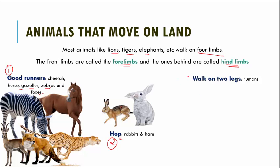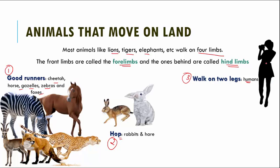Next, we have humans. Humans are the only life forms that generally and comfortably walk on two legs. Our hind limbs are modified as feet for walking, while our forelimbs are modified for holding and grabbing things. Our thumb is arranged in such a way that we can hold things — a special feature of only human beings, as no other animal's thumbs allow them to do so.